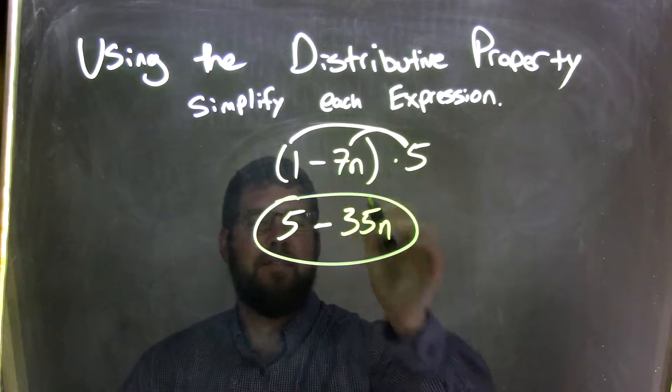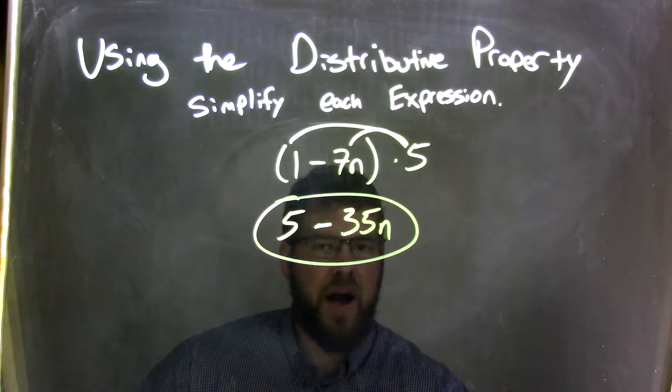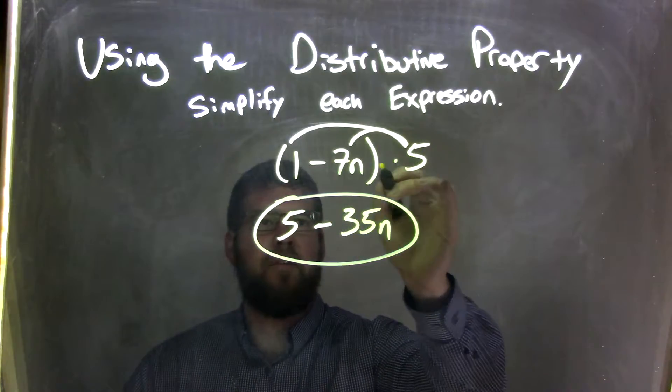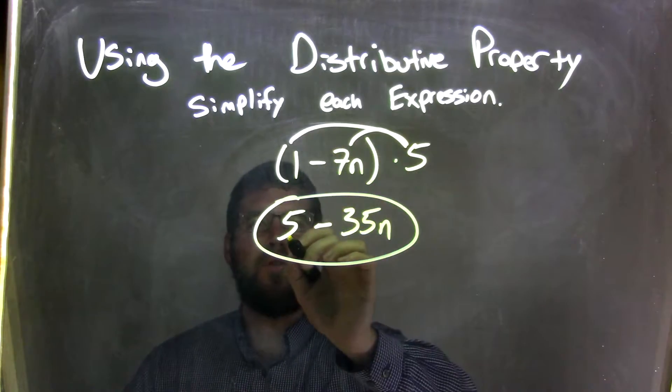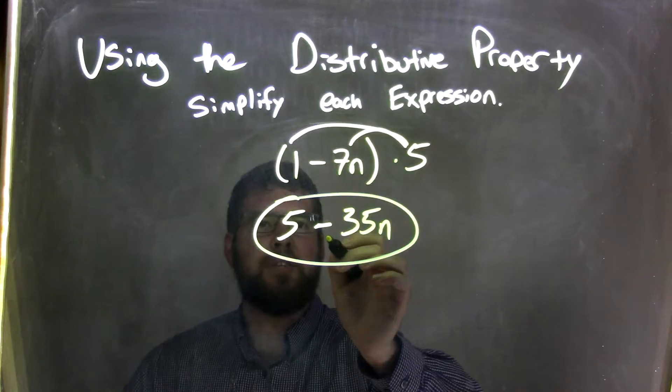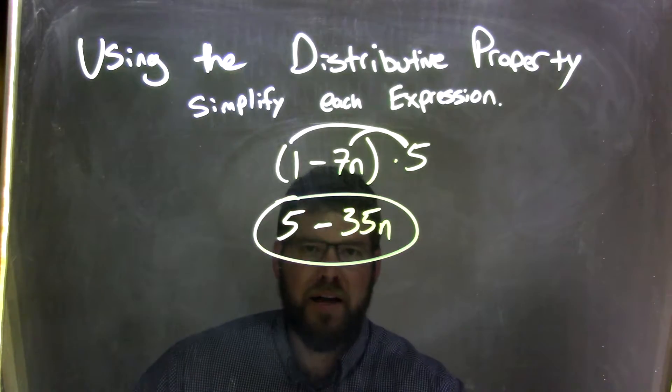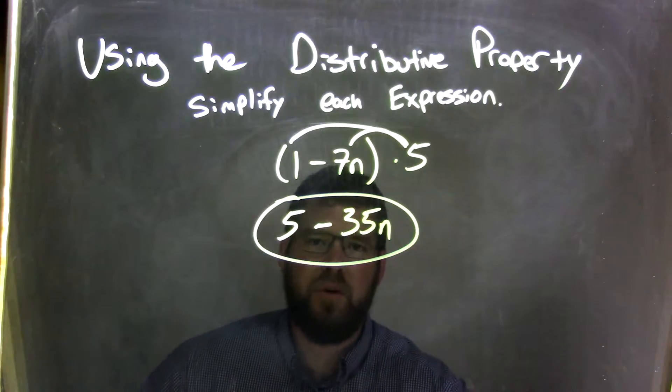We have the 1 minus 7n inside the parentheses. They're not like terms, we can't combine. So we multiplied the 5 that was on the outside, that was multiplication. 5 times 1 was 5, brought down the subtraction. 5 times 7n is 35n. And so my final answer here is 5 minus 35n.